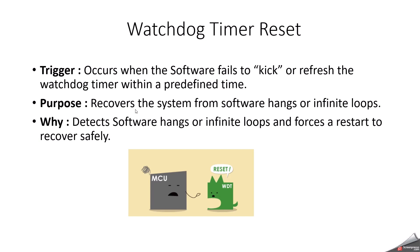The purpose of watchdog reset is to recover the system from software hangs or infinite loops, forcing a restart to recover safely. How it works: the watchdog timer is essentially a counter that counts down from a predetermined value. The microcontroller software needs to periodically kick or reset the watchdog timer by sending a signal to it. If the microcontroller doesn't send the signal within the specified time, the timer reaches zero and triggers a reset, restarting the microcontroller. The watchdog timer reset is used for software error recovery, hardware failure detection, and mainly for system reliability.